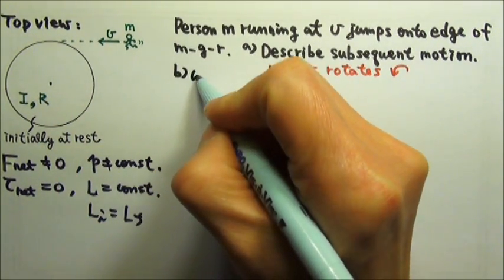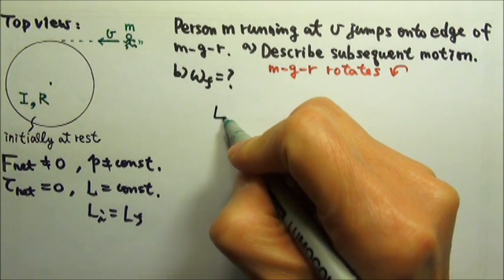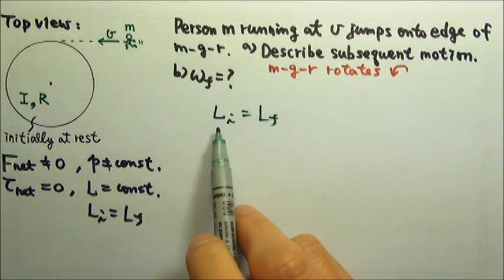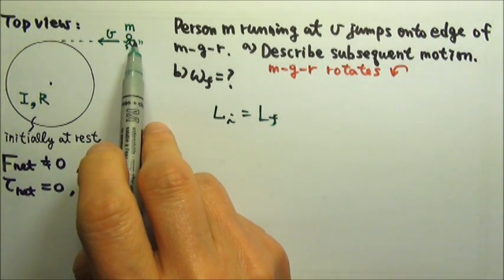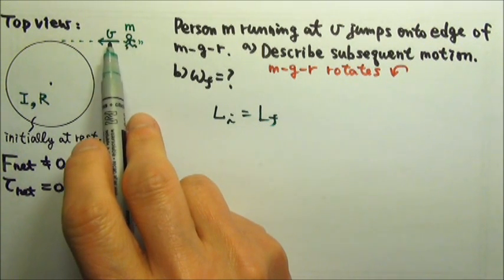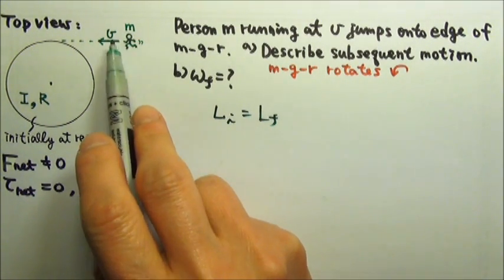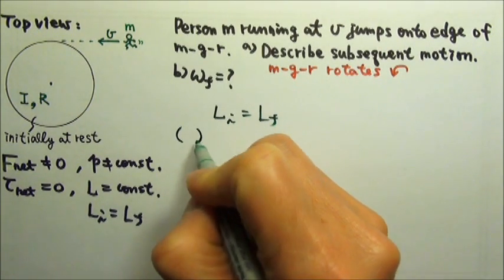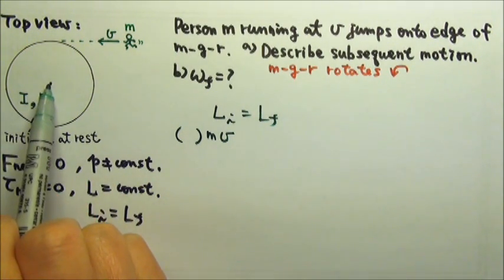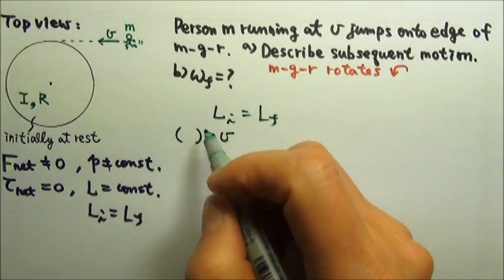Part B: let's find the final angular velocity of the merry-go-round using conservation of angular momentum. Initially, the running person is the one with angular momentum. Since we can treat the person like a point mass, the person's angular momentum will be r-perpendicular times mv. The perpendicular distance between the line of motion and the axis is the radius of the merry-go-round, big R.